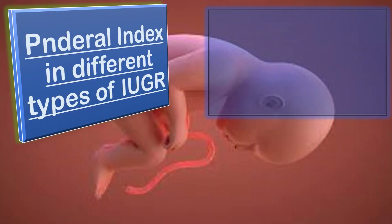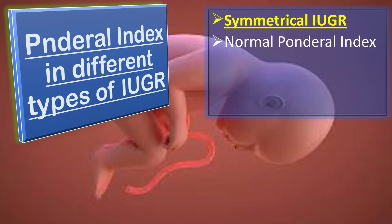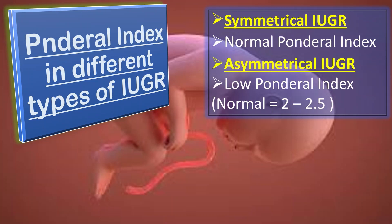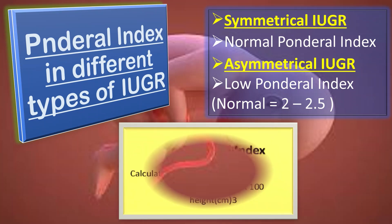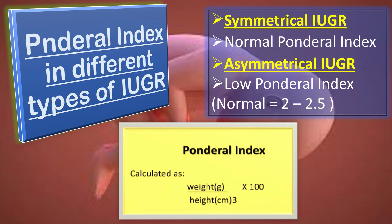The last difference is about the ponderal index in different types of IUGR. In symmetrical IUGR, there is a normal ponderal index, whereas in asymmetrical IUGR, the ponderal index is low. The normal ponderal index is 2 to 2.5, and it is calculated using this formula: weight in grams divided by height in centimeters cubed, multiplied by 100.